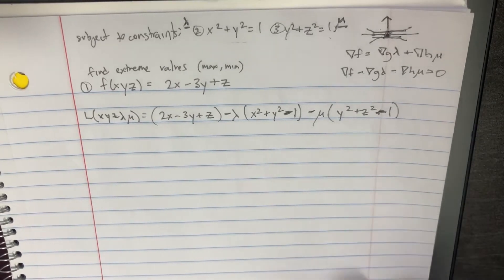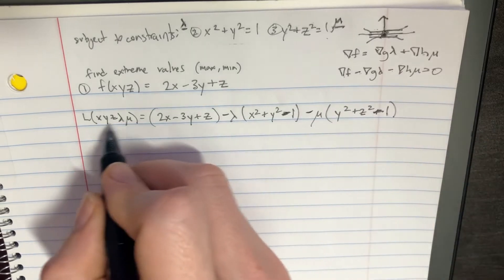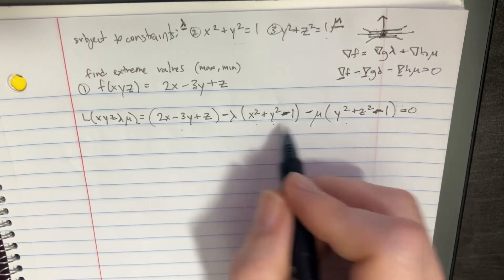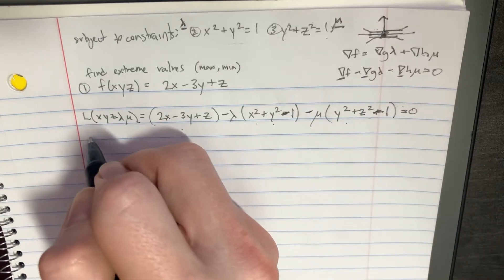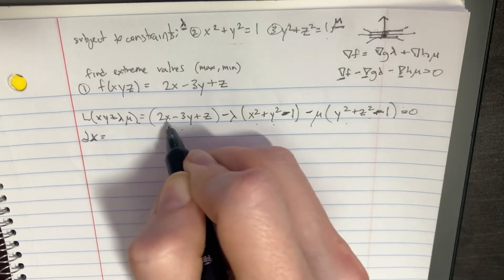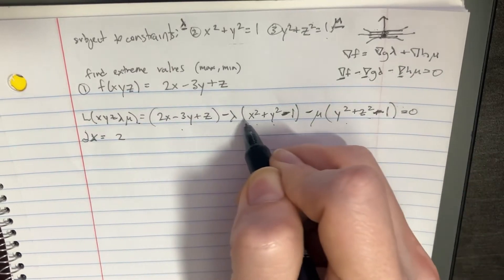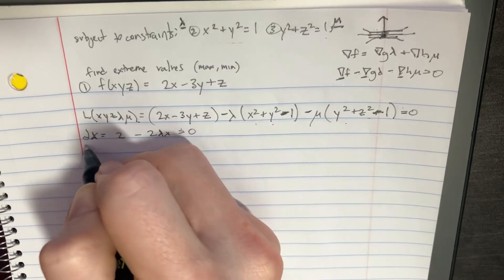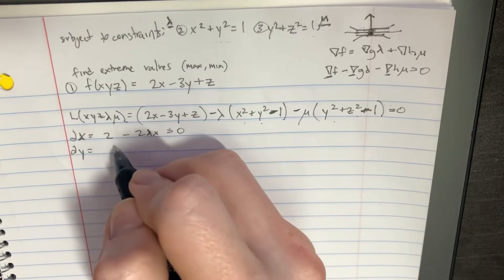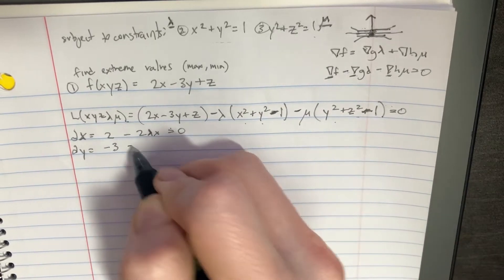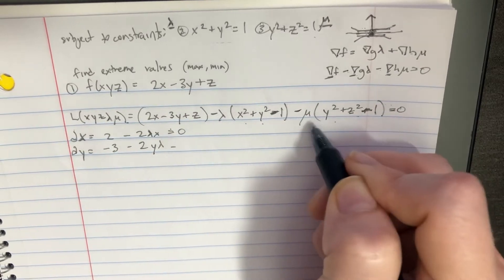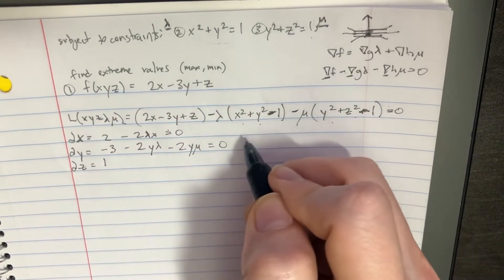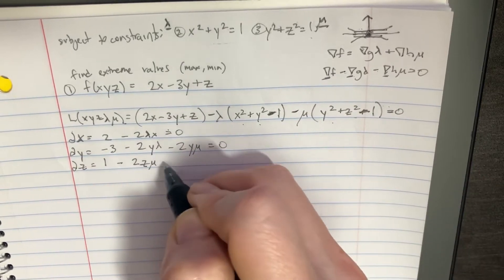Minuses and pluses are a little bit difficult to keep track of, as usual. But this is our Lagrange, which is supposed to be equal to zero. Now we're going to take the gradients — partial derivatives. In terms of x, that's going to be 2 minus 2λx, equal to zero. The partial with respect to y is negative 3 minus 2yλ minus 2yμ, equal to zero. And the partial with z is 1 minus 2zμ, equal to zero.